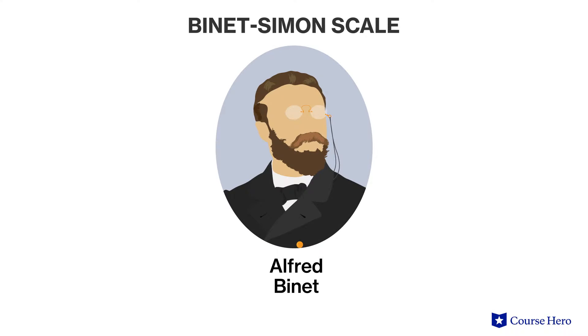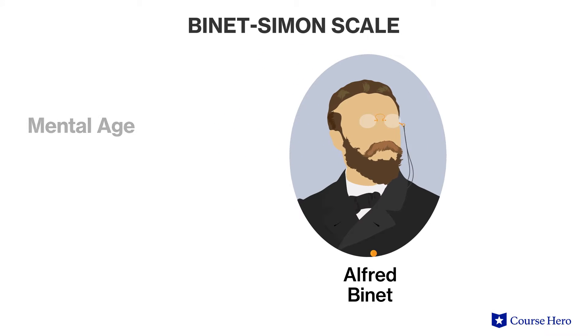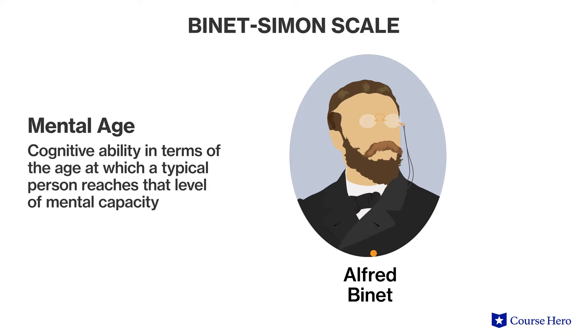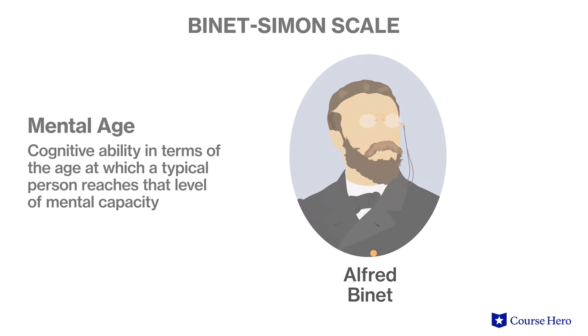The Binet-Simon scale calculated mental age, an expression of cognitive ability in terms of the age at which a person typically reaches that level of mental capacity. So a six-year-old who performs as well as the average nine-year-old would have a mental age of nine.